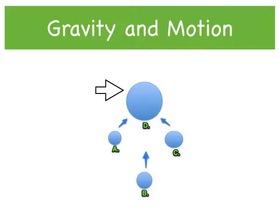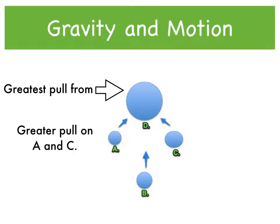So object D would have the greatest gravitational force or pull compared to A, B, or C. The size of the force also depends on the distance between the objects. So object D would have the greatest attractive force or pull on objects A and C because they are closer than B.